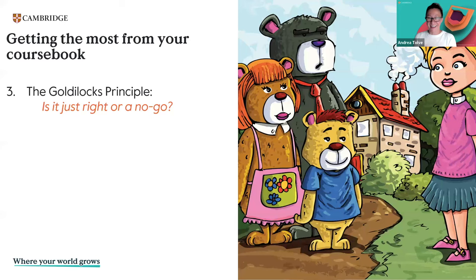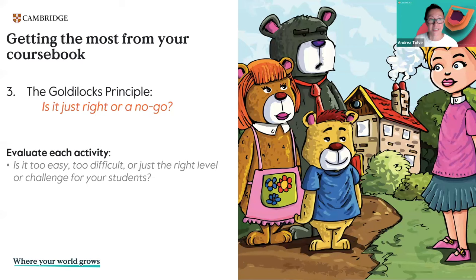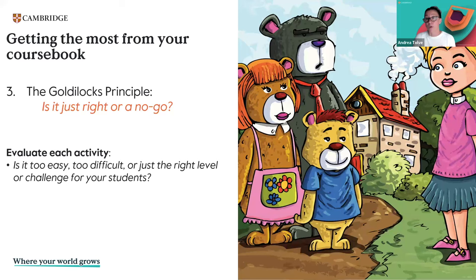The Goldilocks principle — is it just right or a no-go? Evaluating each activity: is it too easy, too difficult, or just the right level of challenge for your students? We know that if activities are too easy, it can lead to boredom. While if they're too challenging, it might discourage students and cause them to act out. So we may have to adapt the activity to match our students' proficiency levels.